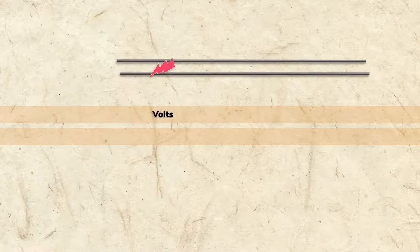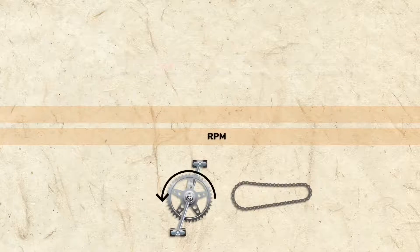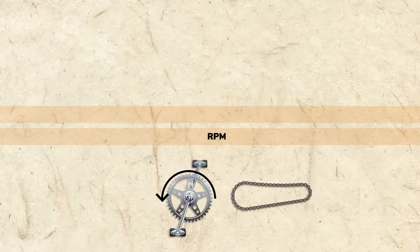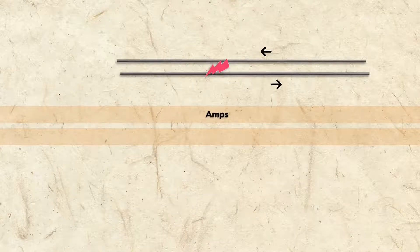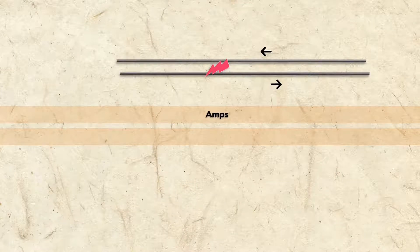The rate that a rider moves a specific amount of chain is measured in revolutions per minute, or RPM. The rate that a battery moves a specific amount of charge through wires is measured in amps.